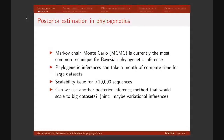So what we want to do is posterior estimation in phylogenetics. Usually we do this using Markov chain Monte Carlo — that's the most widely used technique. All the software like MrBayes, Beast, PhyloBayes, RedBayes, they all use some kind of MCMC algorithm. But one of the problems with MCMC is that it can take a long time to compute for large datasets. For more than 10,000 sequences, for example, it becomes almost impossible to run. It's not just the number of sequences but also the number of sites in the alignments. We also have a lot of whole genome alignments now. So the question is: can we use another posterior inference method that would scale to big datasets? The hint is that maybe it's variational inference, and that's what I'm going to talk about today.